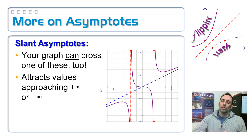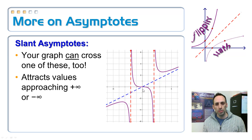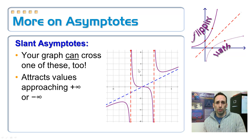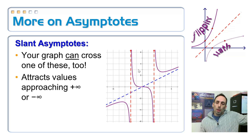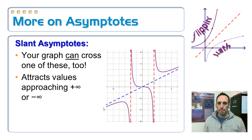A slant asymptote is exactly the same situation as it was for the horizontal: you can cross one of these too. You can see in the picture — if you have to cross it in order to get to an x-intercept. And just like the horizontal asymptote, it's only attracting values at positive or negative infinity. So here's where it will get crossed — far, far away from the origin.